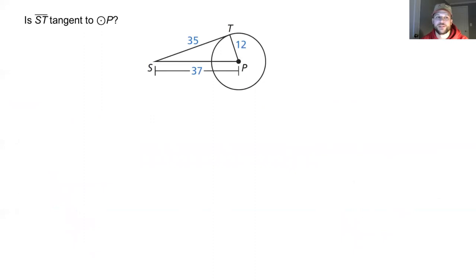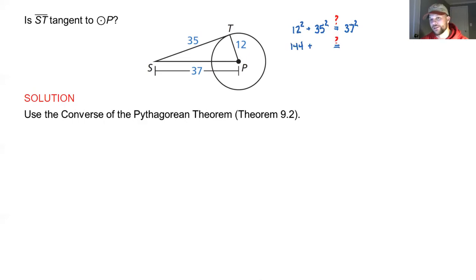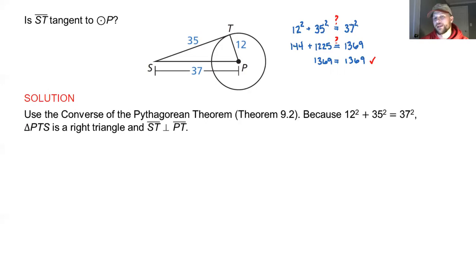In the first example, we determine if line ST is tangent to circle P. ST is 35 units and forms a triangle, so we check using the Pythagorean theorem: 12 squared plus 35 squared equals 37 squared. That gives 144 plus 1225 equals 1369, which checks out as 1369 equals 1369. So yes, ST is tangent to circle P because it forms a perpendicular angle with radius PT.